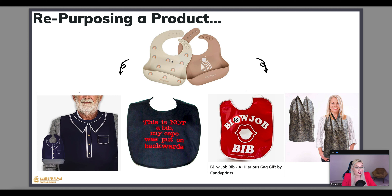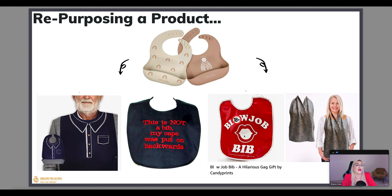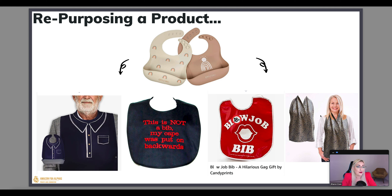A great example — a normal silicone bib usually sold for babies, but the minute you put a certain design on it, it can be sold to seniors who really do need bibs but are embarrassed of them. Changing the design lets you sell it to a very specific buyer avatar. There are also some slightly adult-humor products that make a lot of money around Valentine's Day — at the end of the day they've taken a bib and repurposed it to a very specific buyer avatar as a gag product.